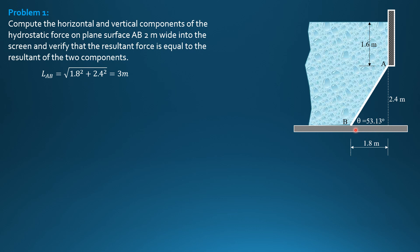Then computing the angle theta: arctan of 2.4 over 1.8 is 53.13 degrees. So this is the centroid of the gate, center of gravity, and this is the center of pressure where F acts.